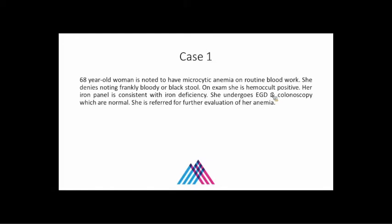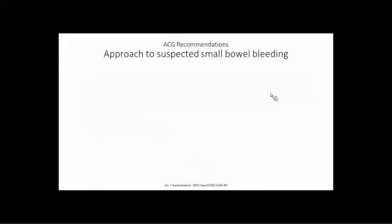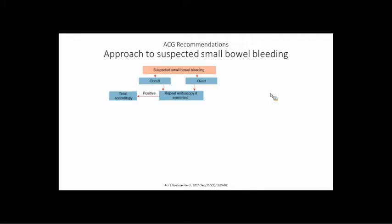Case one: a 68-year-old woman noted to have microcytic anemia on routine blood work. She denies any frank bloody or black stools. On exam she's hemoccult positive. Her iron panel is consistent with iron deficiency. She undergoes EGD and colonoscopy, both of which are normal, and she's referred for evaluation of anemia. This is more of an outpatient case, but presumably we're thinking this patient has an occult GI bleed from a small bowel source. I'm going to base a lot of this on the ACG guidelines from 2015.